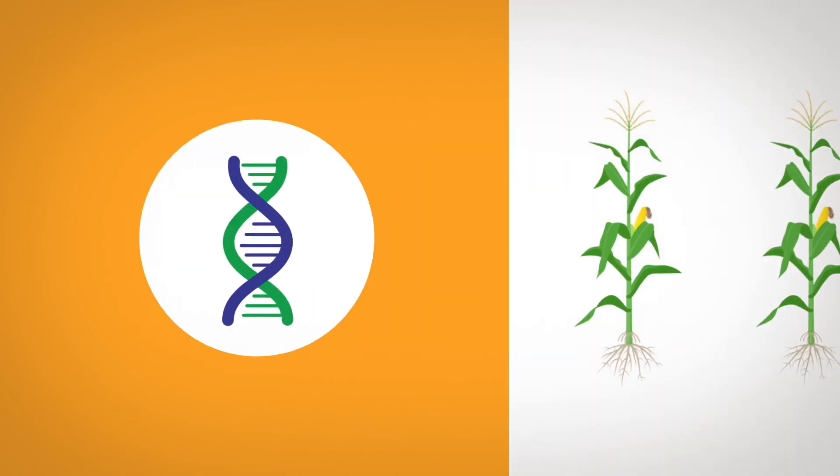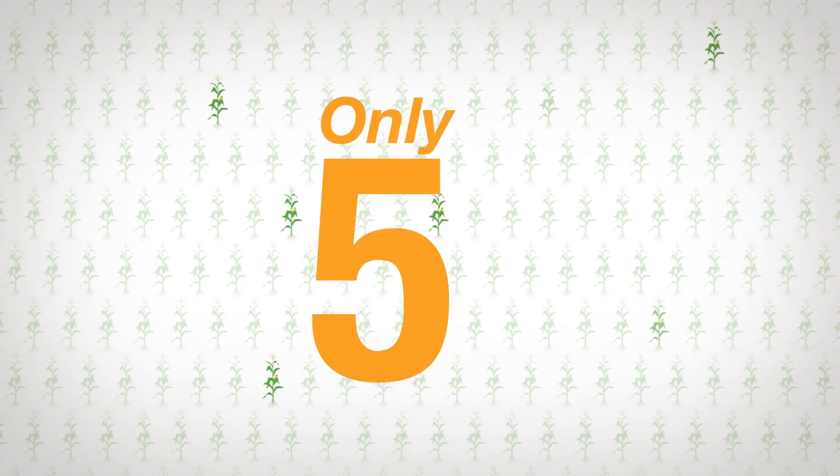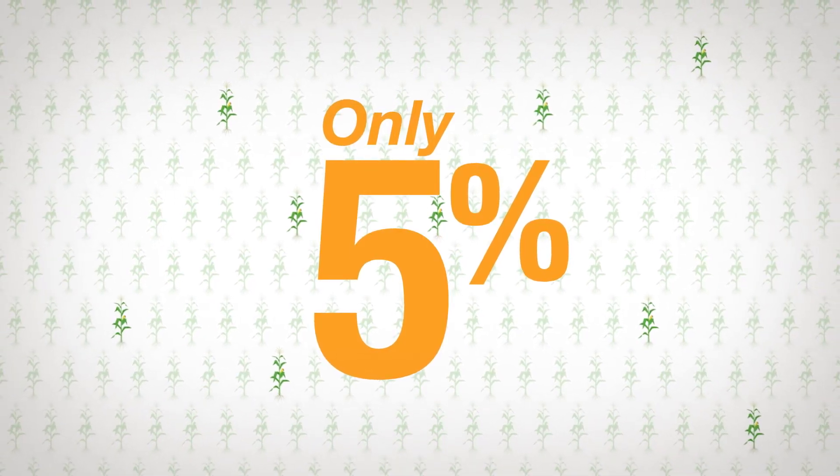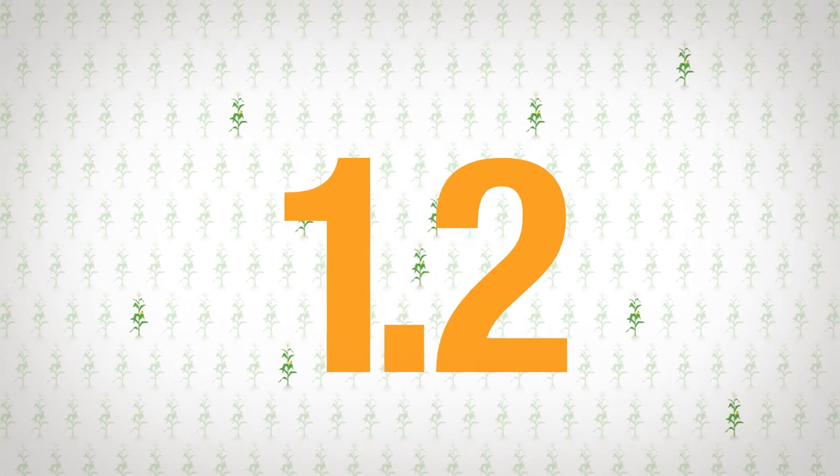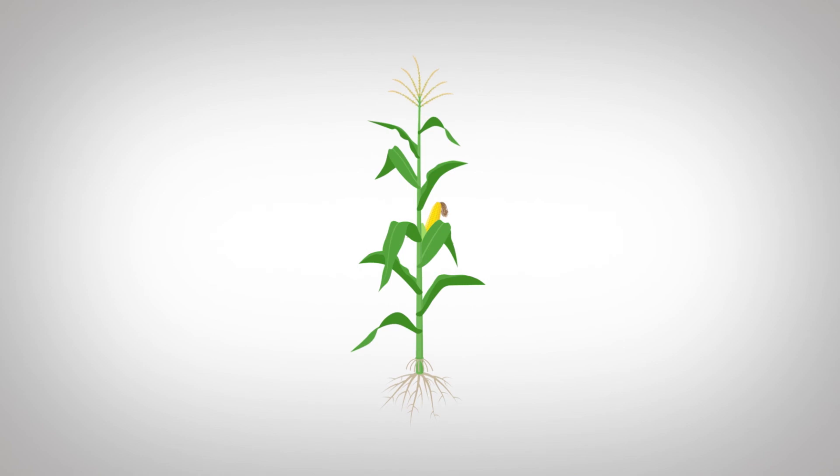With gene editing and double haploid breeding alone, you have to have transformable varieties to work with. Unfortunately, only 5% of corn varieties are transformable. And even when you get a transformable variety, it takes 2.5 years of trait introgression to achieve the original variety.